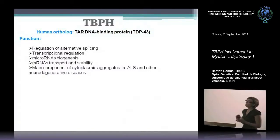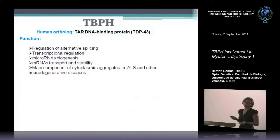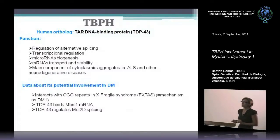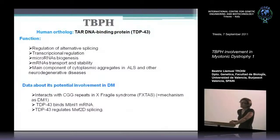TDP43 has several functions related to RNA metabolism, like alternative splicing, transcriptional regulation, microRNA biogenesis, transport and stability, and it is mainly known for its role in several neurodegenerative diseases. Data supporting its involvement in DM1 was that it could attach to CGG repeats in Fragile X, which has a similar mechanism to DM1. Also, TDP43 has been found to bind to MBNL1 mRNA, and it also regulates MEF2 splicing — MEF2 is a transcription factor important for muscle development and has been shown to regulate transcription of muscle-blind 1.